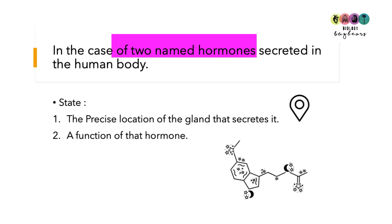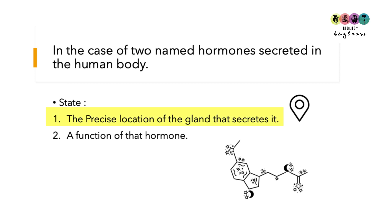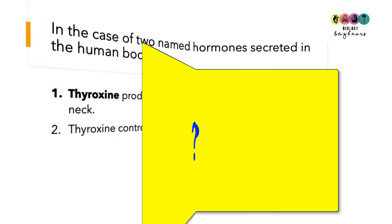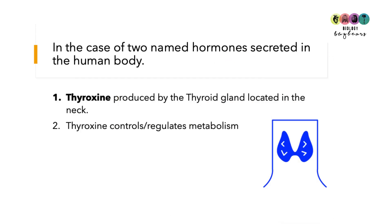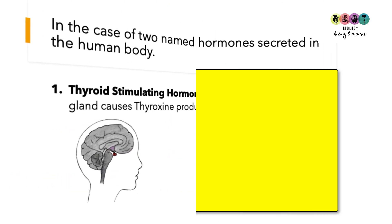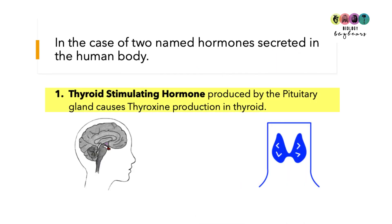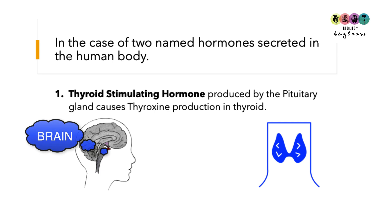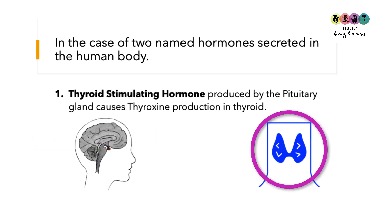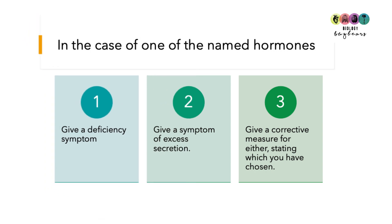The next question: in the case of two named hormones, state the precise location of the gland that secretes it and a function of that hormone. The first hormone is thyroxine — always use thyroxine. It's produced by the thyroid gland, located in the neck, and thyroxine controls or regulates metabolism. For the second named hormone, thyroid stimulating hormone (TSH) is produced by the pituitary gland, located in the brain at the base of the skull, and its function is to cause the production of thyroxine in the thyroid gland.